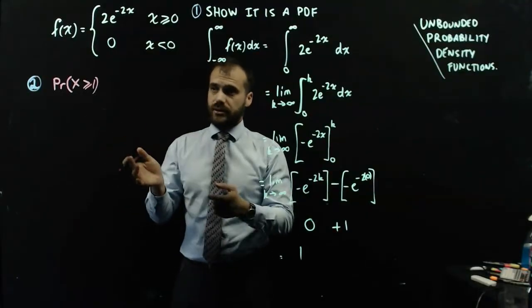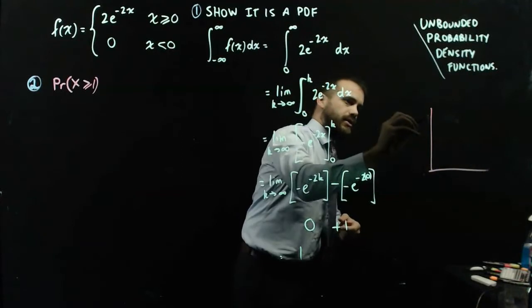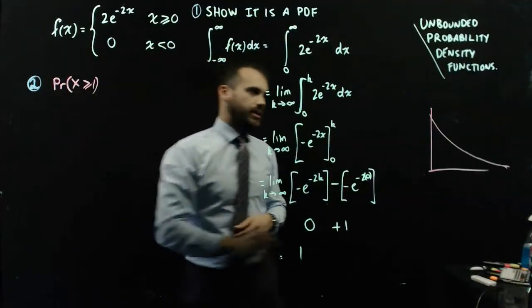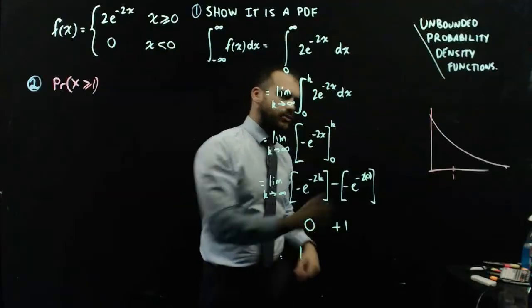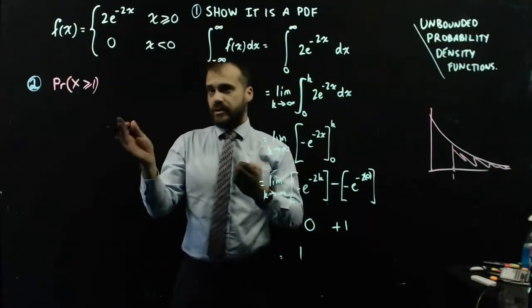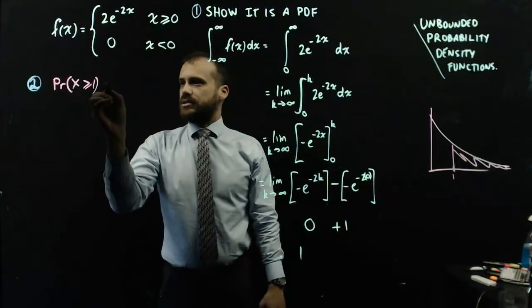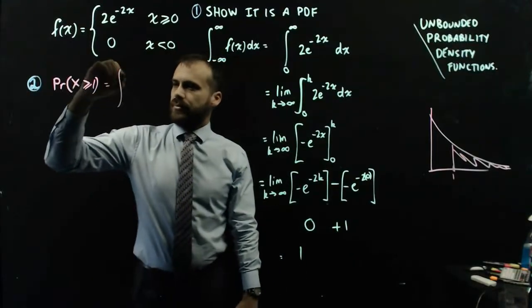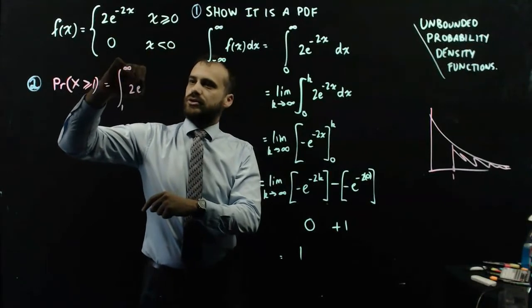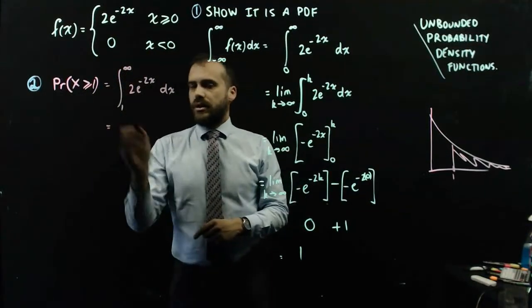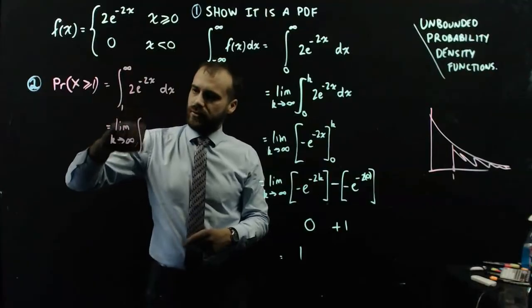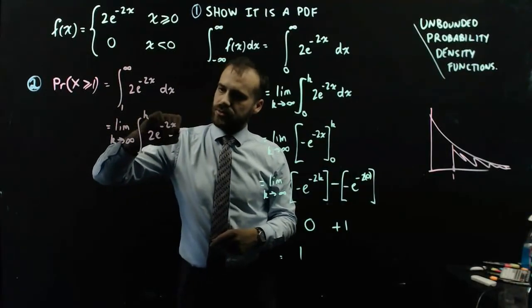Now I'm going to actually calculate a probability using limits. I want to know the probability that x is greater than 1 — that's the area under the curve from 1 to infinity. So I write the integral from 1 to infinity of 2e to the negative 2x with respect to x, and replace infinity with k: the limit as k approaches infinity of the integral from 1 to k of 2e to the negative 2x with respect to x.